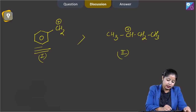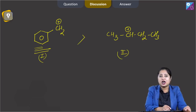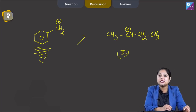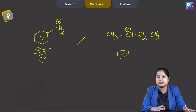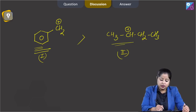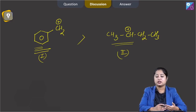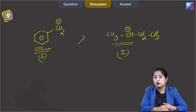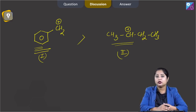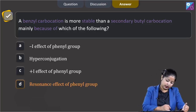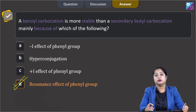Here we can clearly see that the charge is delocalized over the benzene ring because of the resonance effect. On the other hand, in the secondary butyl carbocation the charge is delocalized because of the hyperconjugation effect. So obviously, resonance effect is more dominating — benzyl carbocation is more stable than secondary butyl carbocation because of the resonance effect of the phenyl ring. The correct answer is option D.